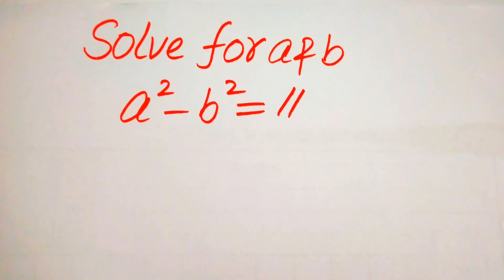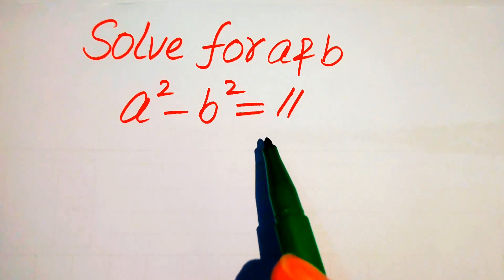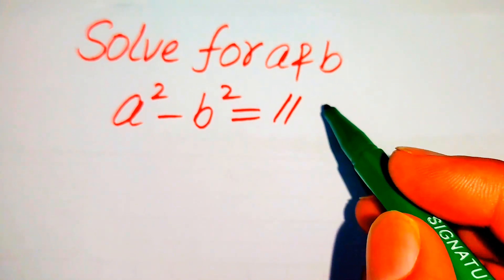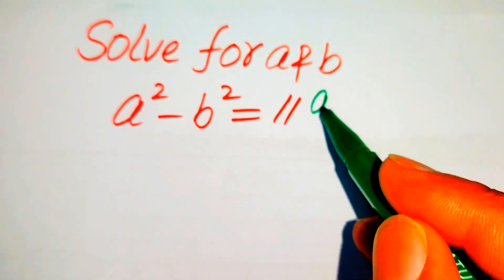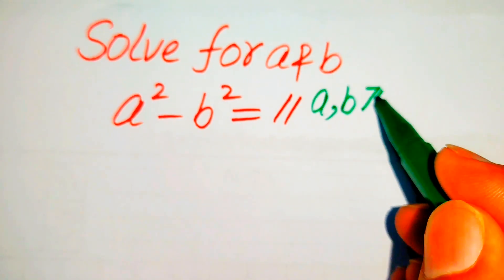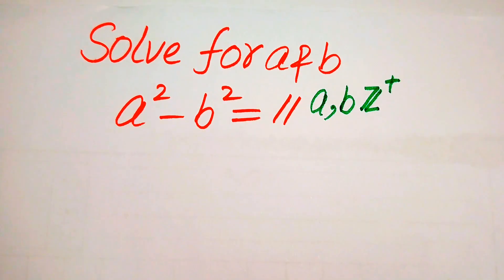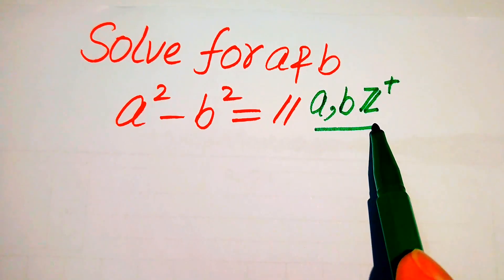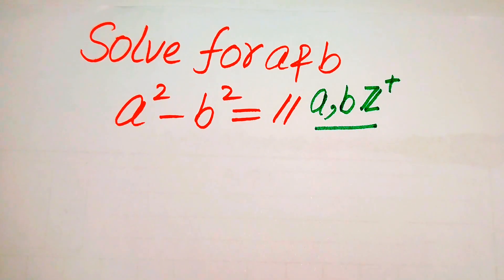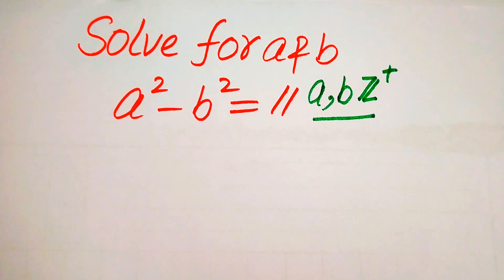Hello everyone. How to solve this problem for the values of a and b if we have a squared minus b squared equals 11. Here we have one more condition in the question statement: a and b must belong to positive integers. We solve this problem for the positive integer values of a and b. If you have any other method in mind, please write it in the comment section.